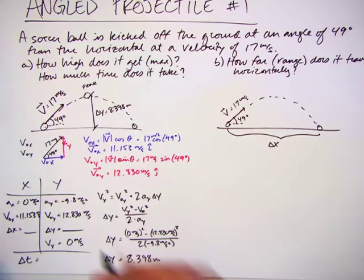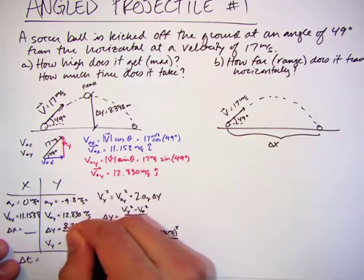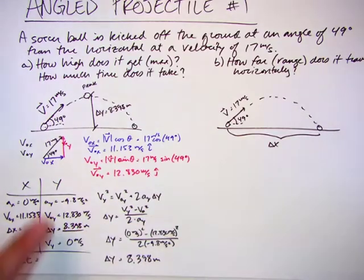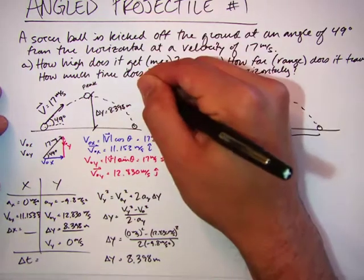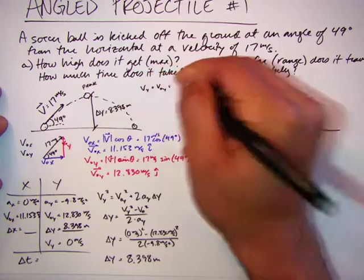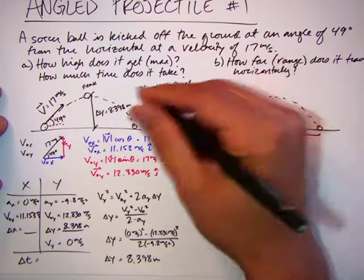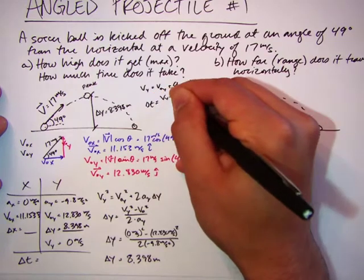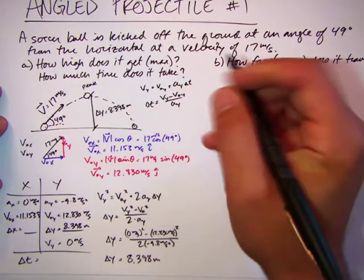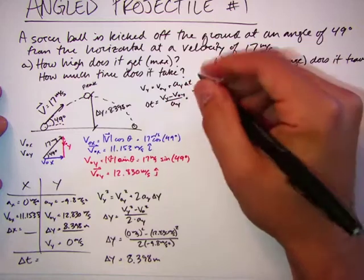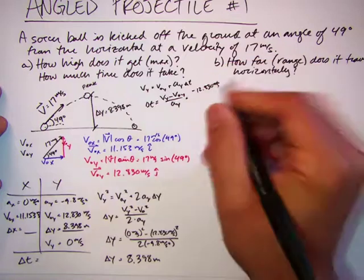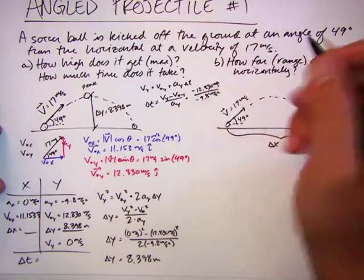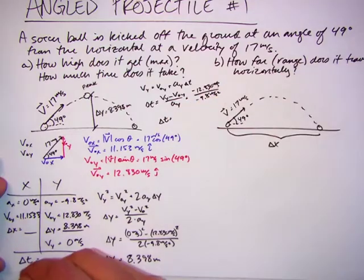So what if I want to know the time it takes to get to the peak? Well, if I want to know delta t, I still have a lot of y information, not a lot of x. So let's use y. The first equation is the easiest, v final, v initial, and a. So vy equals v not y plus ay delta t. So if I simplify this, delta t is vy minus v initial y over ay, which is minus 12.830 meters per second over negative 9.8 meters per second squared.